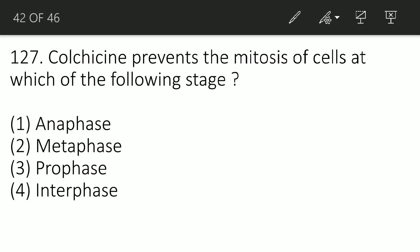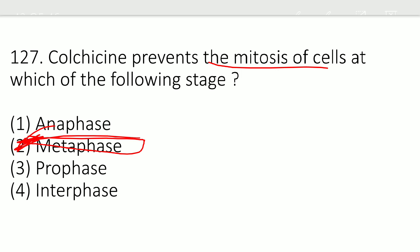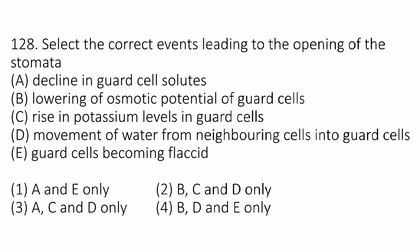Question 125: Colchicine prevents mitosis of cells at which stage? The correct option is B — metaphase. Colchicine arrests cell division at metaphase.